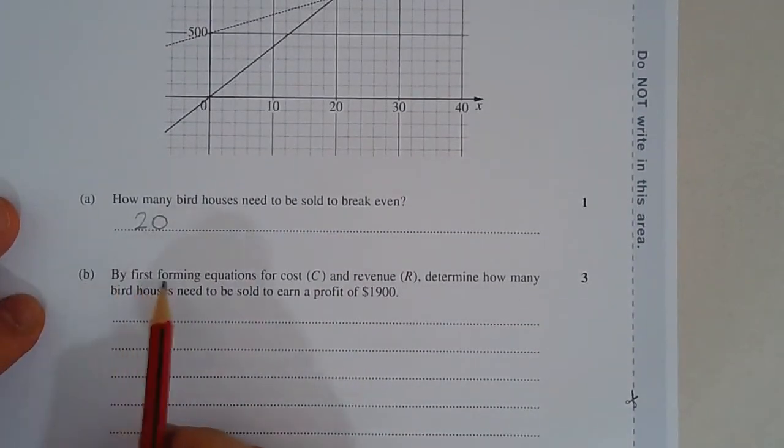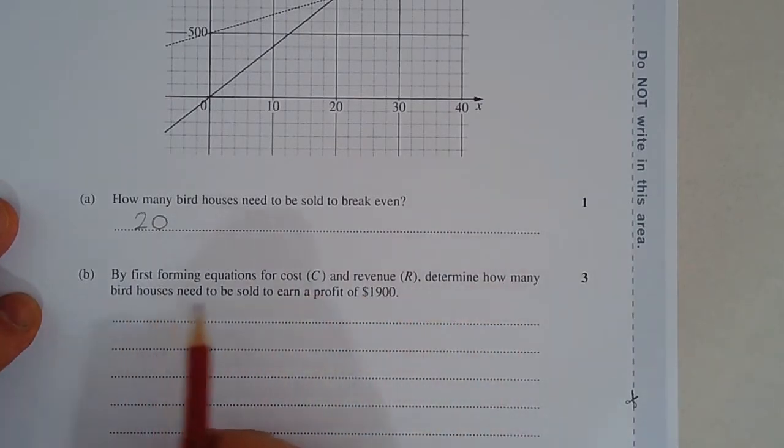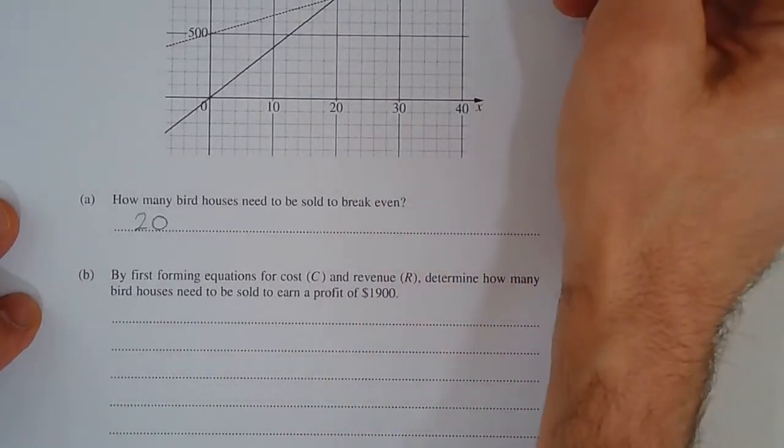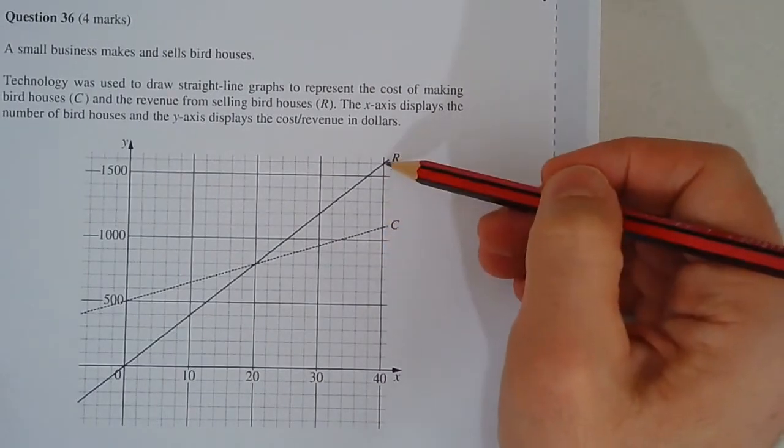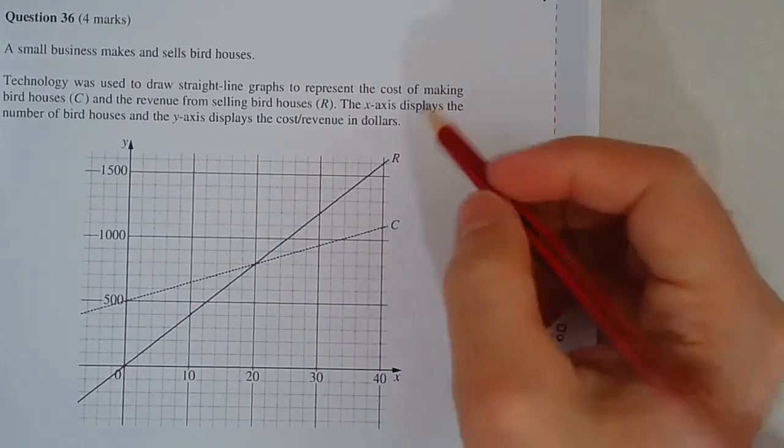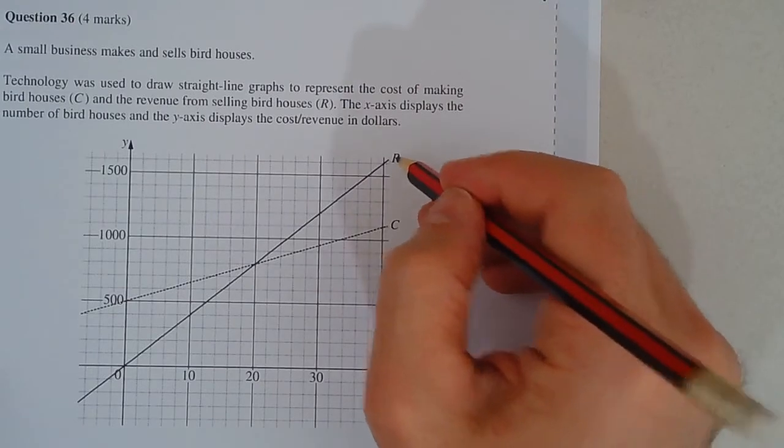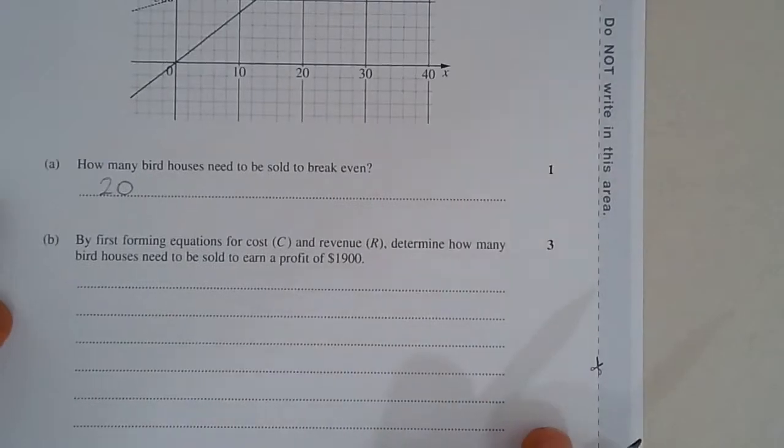Now part B. By first forming equations for cost and revenue, determine how many birdhouses need to be sold to earn a profit of $1,900. So profit is the difference between revenue and cost, and it's going to be $1,900. So we need to form these two equations and then form another equation where R minus C is equal to $1,900. Let's do this first.